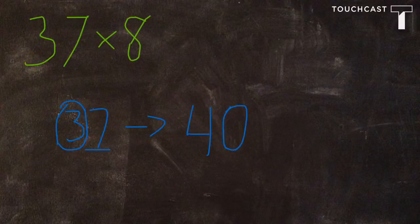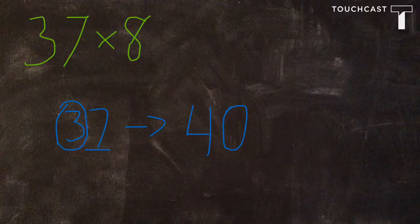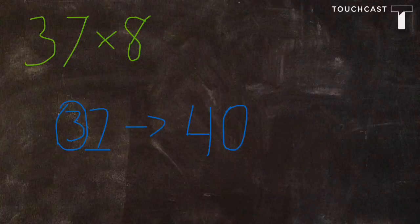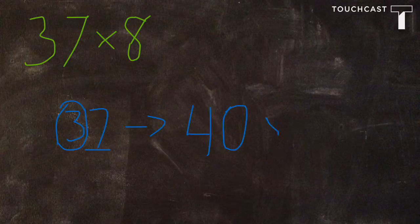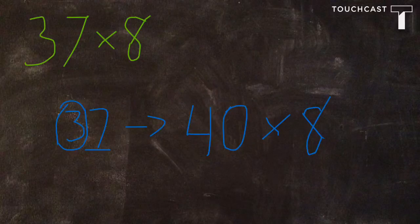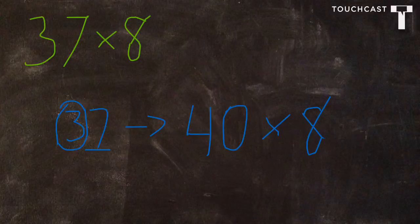Now if you think about the tens that it is in between, it is in between 30 and 40. So 37 is going to be closer to 40. So now we are going to do 40 times 8 to get our estimate.